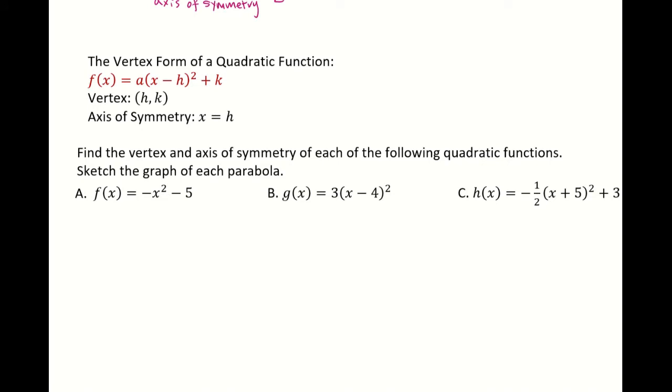With this in mind let's talk about the three problems. For the first quadratic function it is in the vertex form because you can see it as f(x) equals negative (x minus 0) squared minus 5, so here your a is negative 1, your h is 0, your k is negative 5.